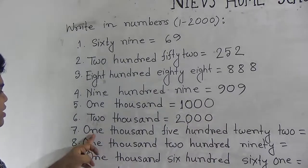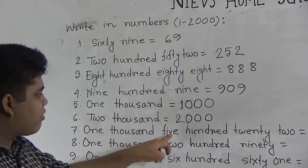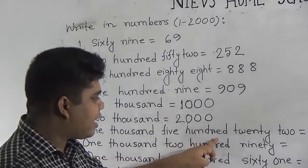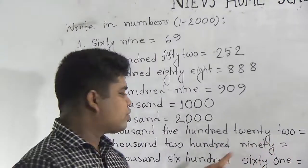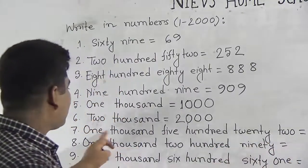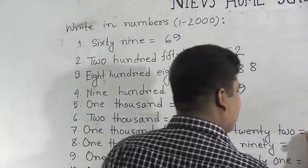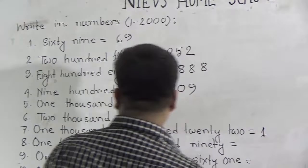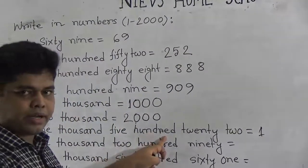Our next number is 1,522. At first, write 1,000, then write 1,500 — 500 means 5, then 20 means 2, and 2 means 2, so we write 1,522.